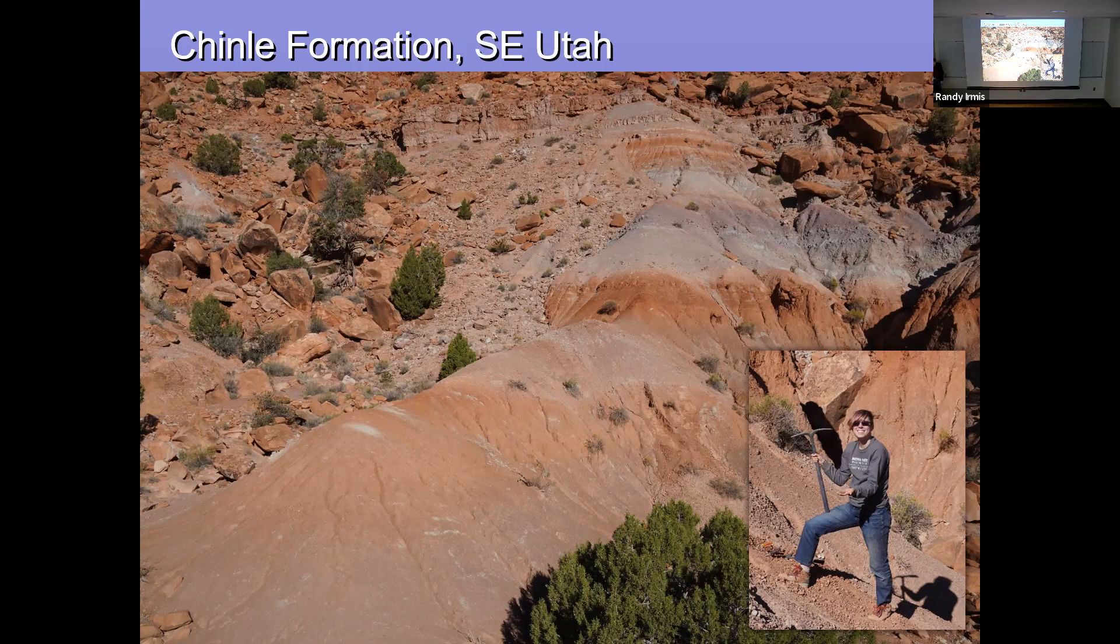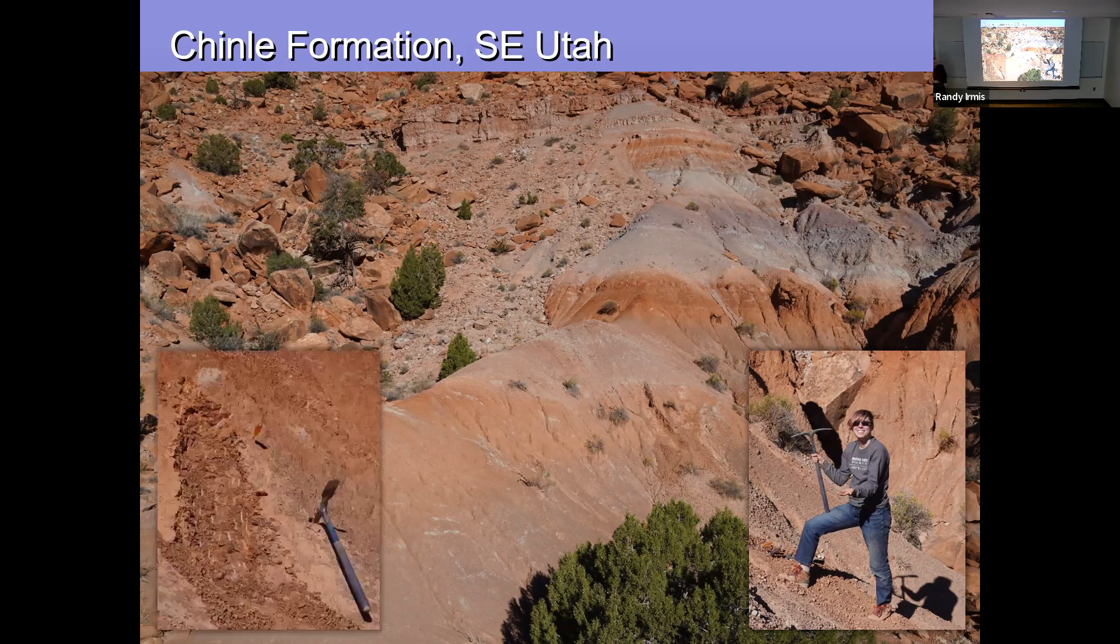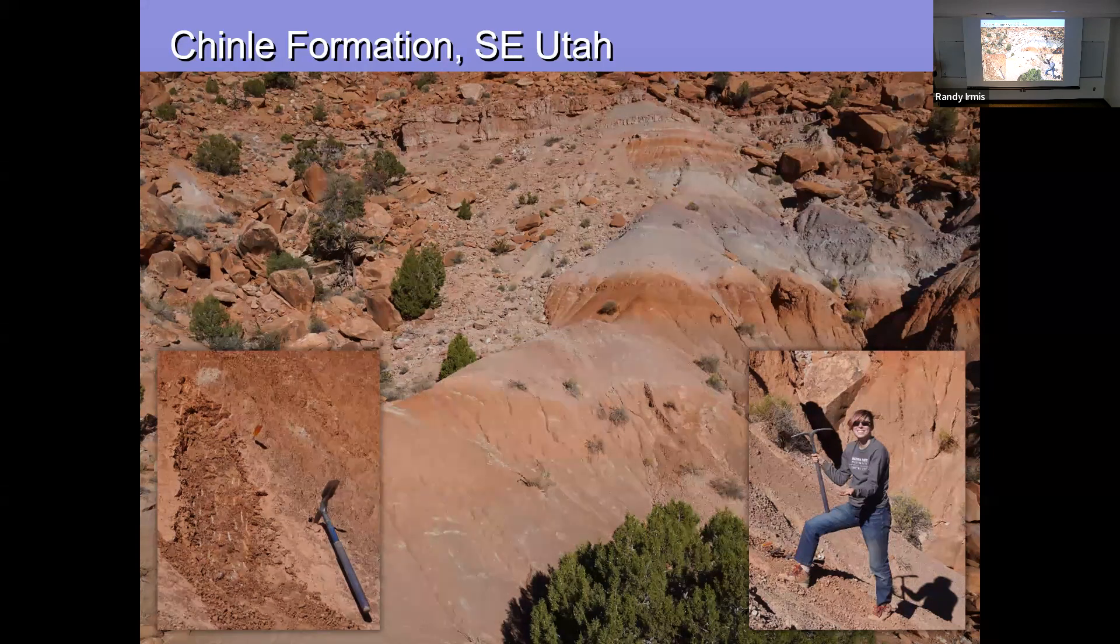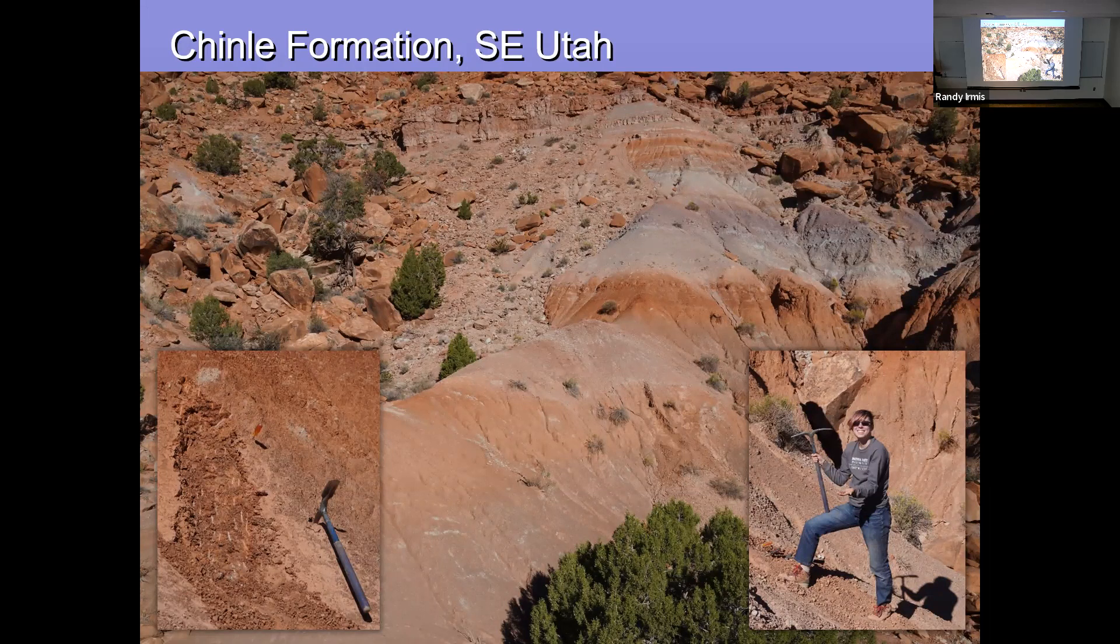So what we did was we wanted to really understand what's going on here isotopically. So we trenched continuously through these soils, taking samples at 10 centimeter intervals. And we didn't just analyze one nodule per 10 centimeter interval. We analyzed three to five nodules to try and understand what sort of variation there might be at each level, as well as through the profile of the soil.